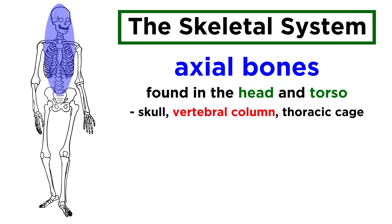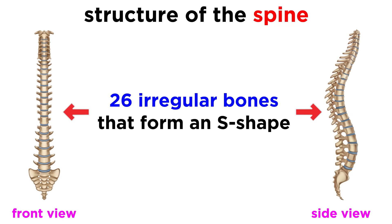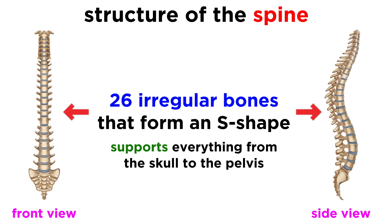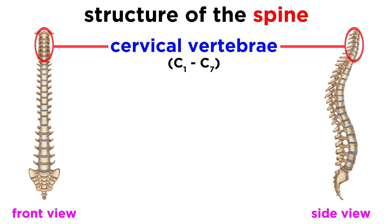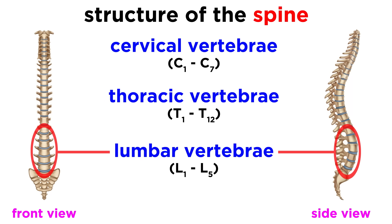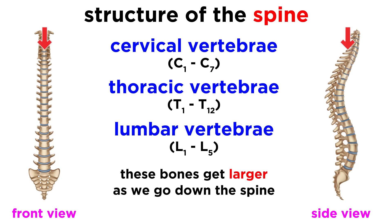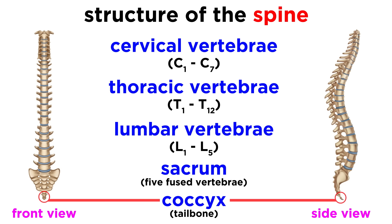Next up in the axial skeleton is the vertebral column, also called the spinal column or simply the spine. This is comprised of twenty-six irregular bones that come together to form a flexible structure in a curvy S shape, and this supports everything from the skull to the pelvis. The spine can be divided into five sections: at the top we have the cervical vertebrae, which are the first seven; the next twelve are called the thoracic vertebrae; and the remaining five are called the lumbar vertebrae. We should note that the vertebrae get larger as we go down in order to support more and more weight. Below the vertebrae we can find the sacrum, which is actually five vertebrae fused together, and lastly below the sacrum there is the coccyx, otherwise known as the tailbone, which is made of a few tiny vertebrae fused together.